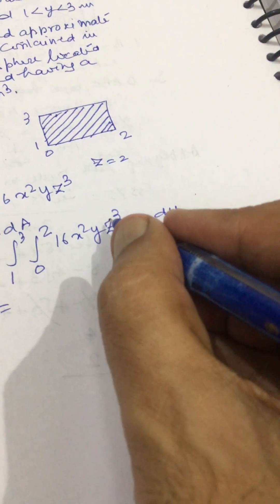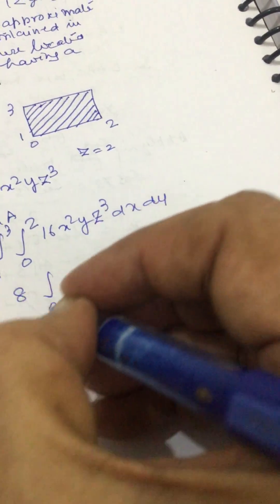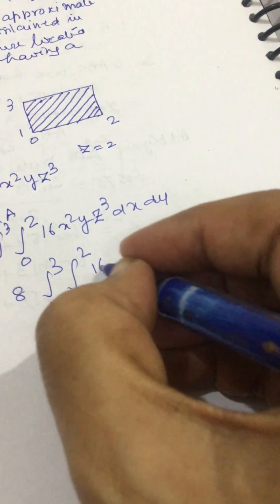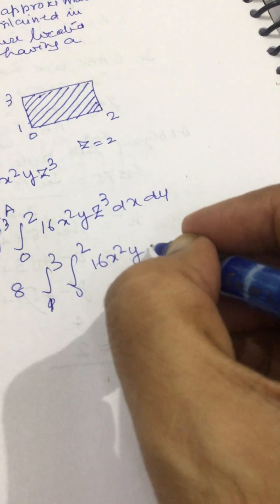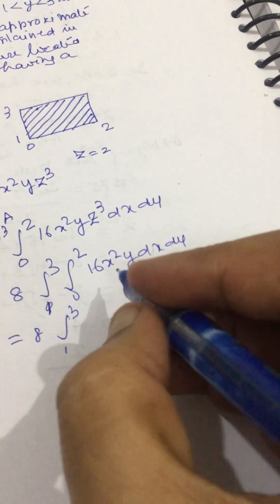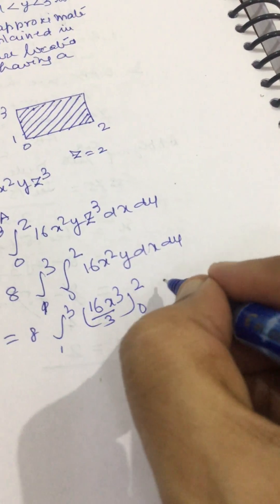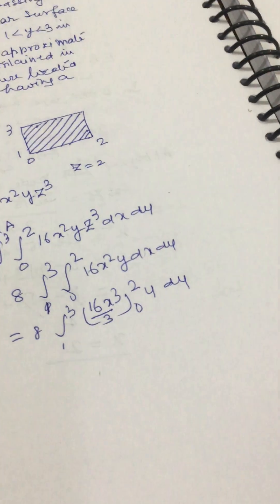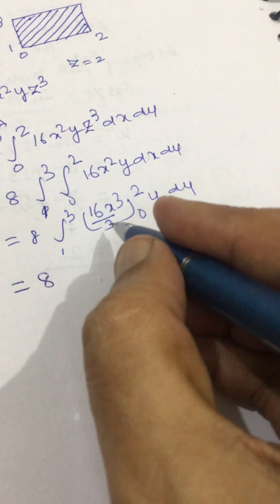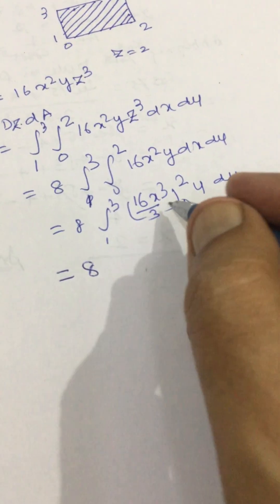We will have to evaluate this integral for calculating the flux. Z is equal to 2, so this becomes 8. This is integral from 1 to 3 and 0 to 2, and we are left with 16x^2y dx dy.